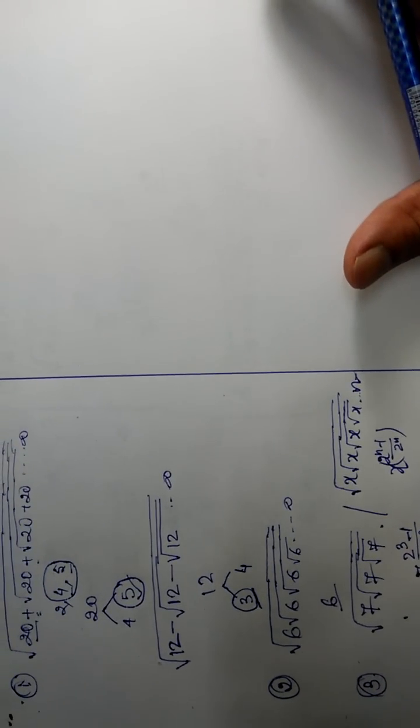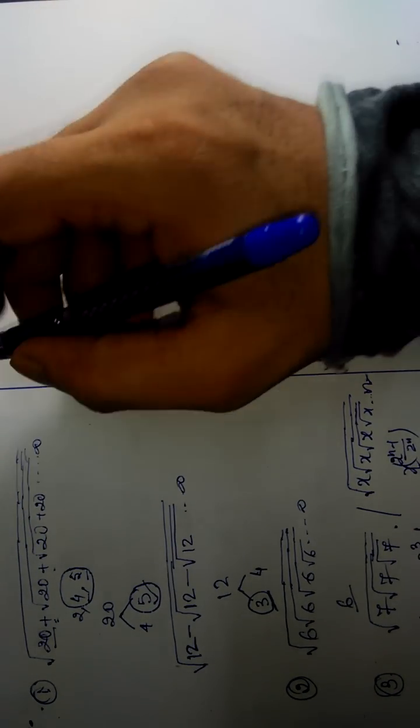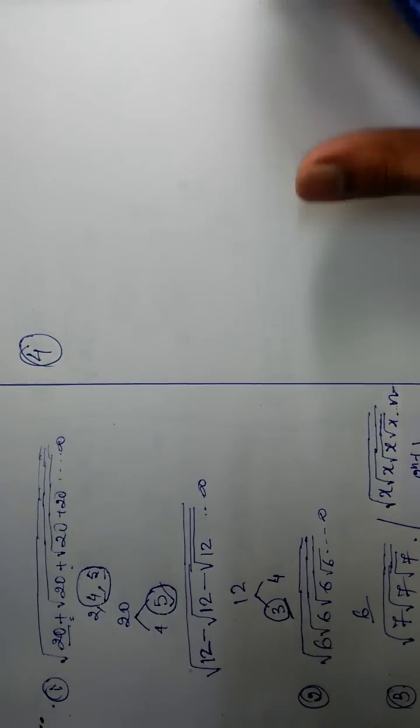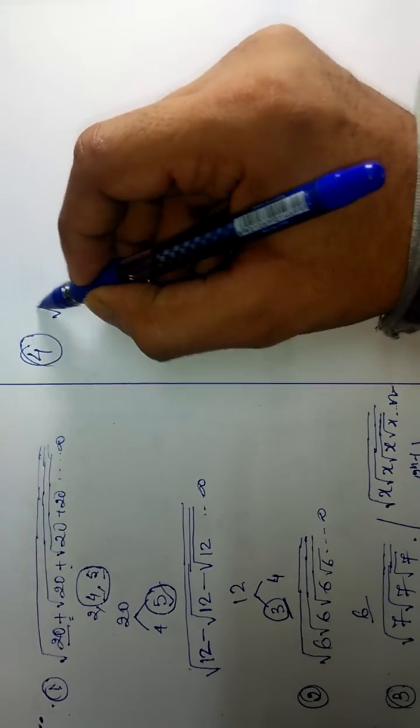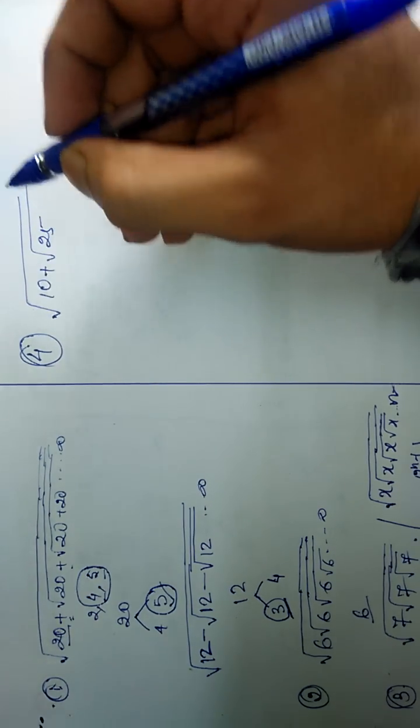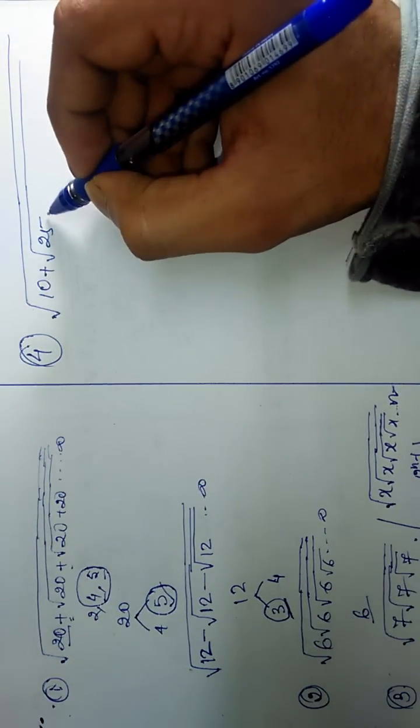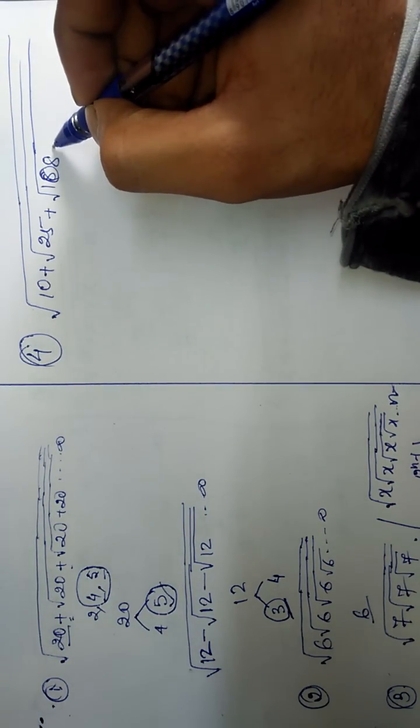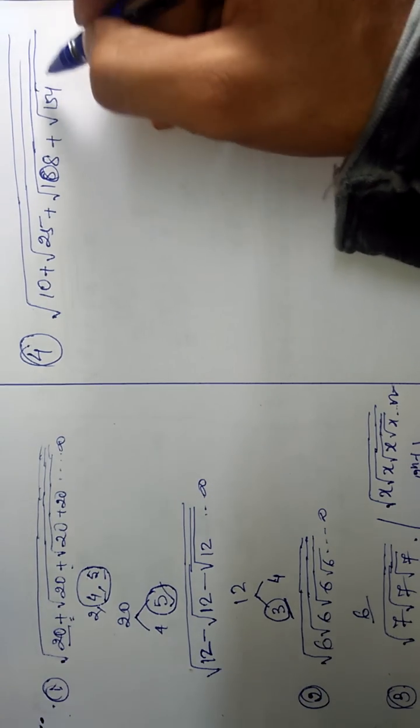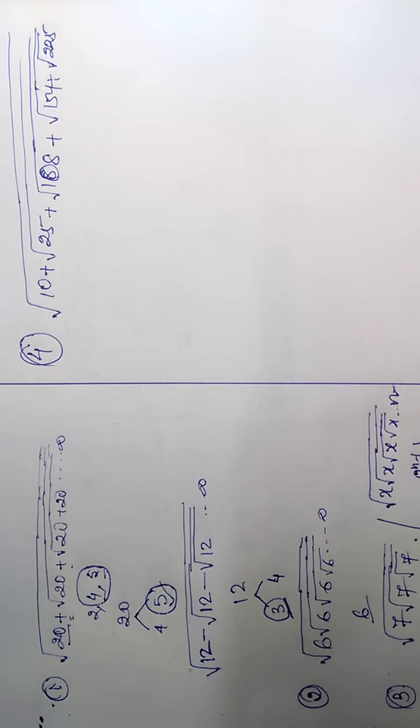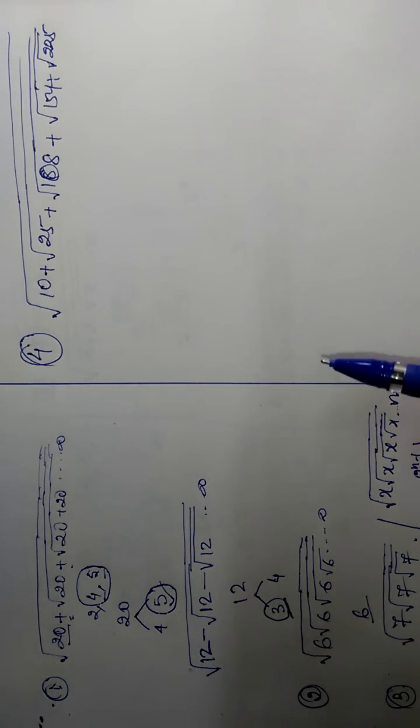Now we will move to the next problem, that is our fourth type. So we can see here: 10, 25, plus 108, plus 154, plus 225. So we can see here all the numbers are different, and there is a plus between them, addition between them.